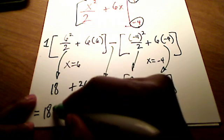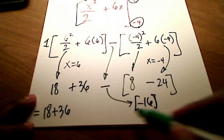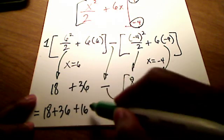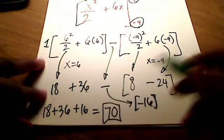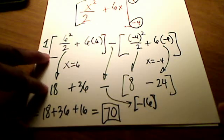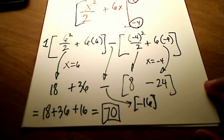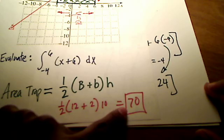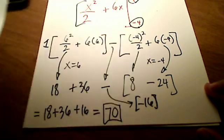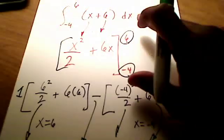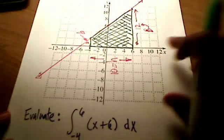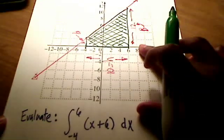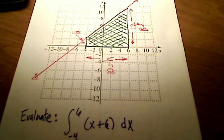I've got 18 plus 36 plus this 16 over here, giving me a total of 70. That's exactly what we had from before. Exactly what we had from that previous answer of 70. So this is solving this integral using the fundamental theorem of calculus. This first method I showed you was solving it using actual area formula. Hope that helps.